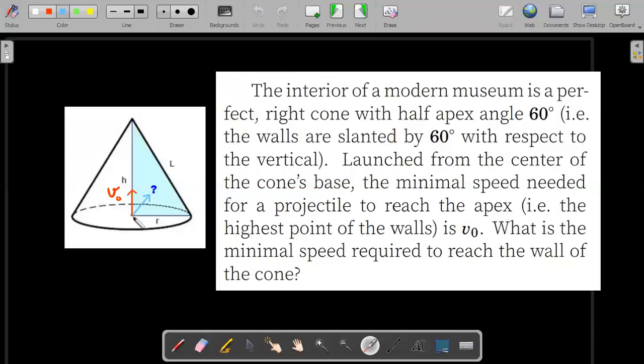So if you launch it straight up, the minimum speed required to reach the top is V0. What is the minimum speed required to reach the wall of the cone? All the parameters marked in the diagram are just for convenience. The only given value is V0. Please neglect air drag.